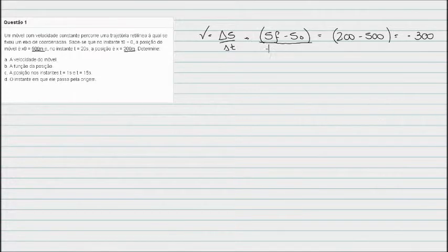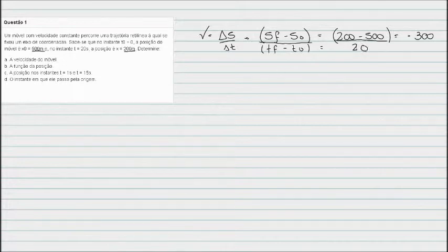O tempo é a mesma coisa: tempo final menos tempo inicial. Nesse caso, o tempo inicial é 0 e o tempo final é de 20 segundos, 20 menos 0 fica 20 mesmo. Então a velocidade dele vai ser menos 300 sobre 20. A velocidade desse corpo então é de menos 15 metros por segundo. Essa é a resposta da letra A.